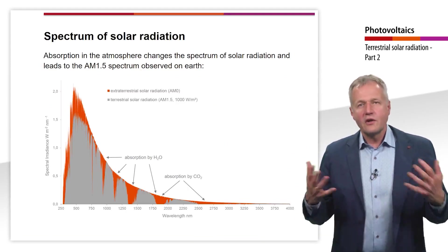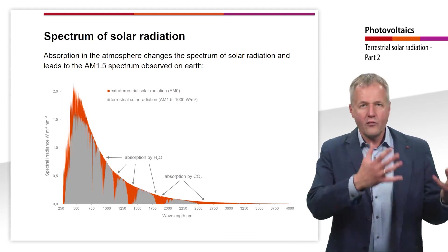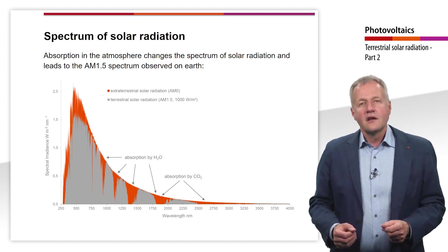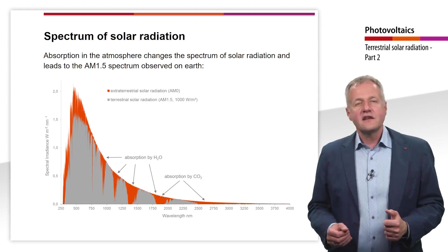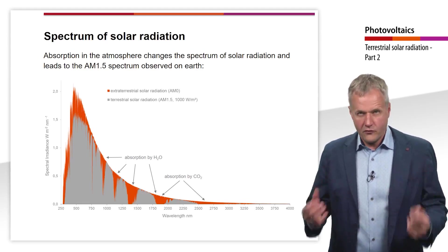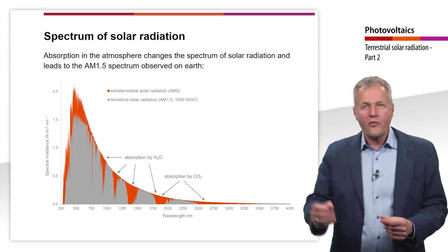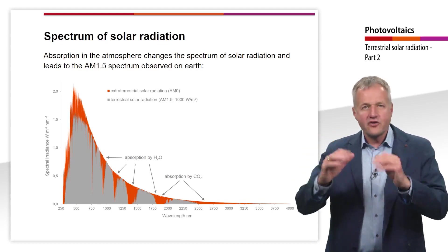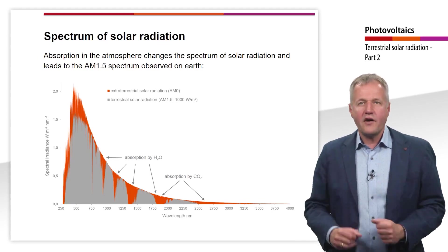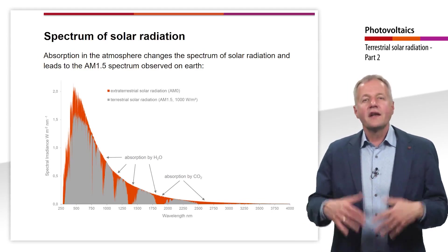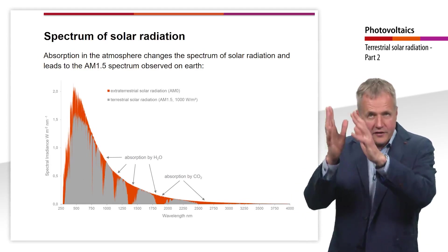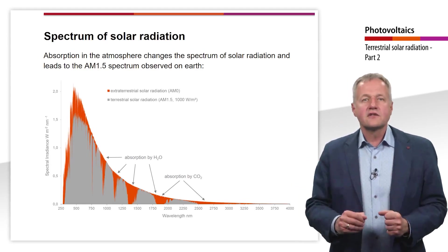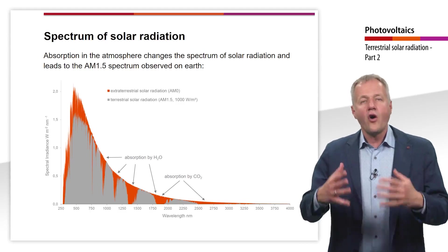This diagram shows the solar spectra at AM0 and AM1.5. The x-axis displays the wavelength in nanometers, and the y-axis shows the radiation intensity in W per nm per square meter. The gray spectrum represents the extraterrestrial solar radiation at AM0, and the red spectrum the terrestrial solar radiation at AM1.5. Water vapor, CO₂, and other gas molecules absorb part of the sunlight, changing the spectrum and leading to the AM1.5 spectrum observed on Earth.